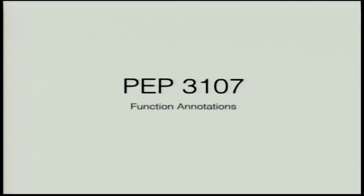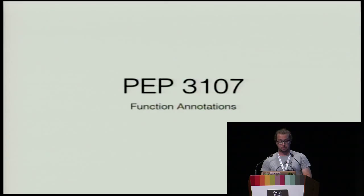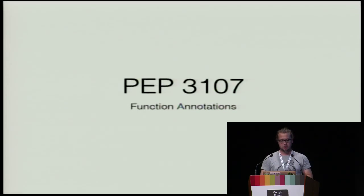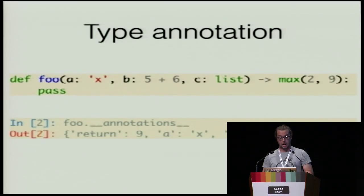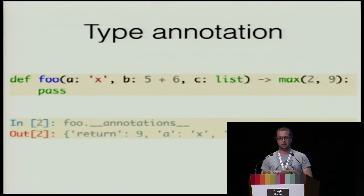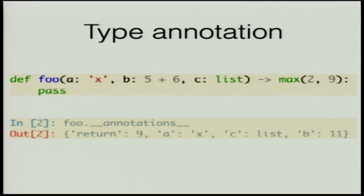As mentioned earlier, there's function annotation — PEP 3107. This syntax was added to Python 3 back in 2006. It allows you to add arbitrary metadata to your method signatures. Those annotations can be retrieved via the __annotations__ dunder method, which means libraries like PyLint and PyFlakes can use these syntax augmentations to help with analysis.